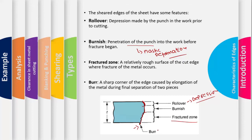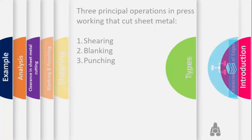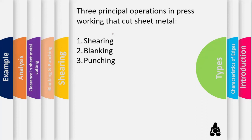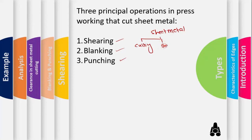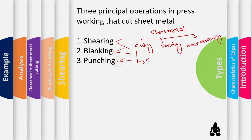Sheet metal cutting has three subtypes: sheet metal shearing, sheet metal blanking, and punching. To summarize the classifications: sheet metal working has cutting, bending, and deep drawing, and sheet metal cutting has further sub-classifications into these three types.